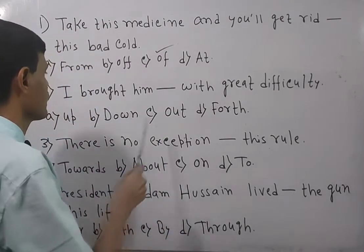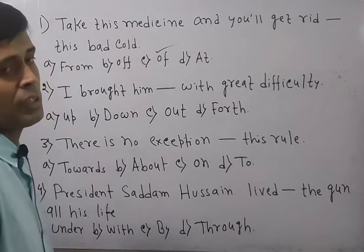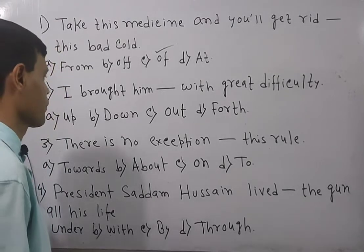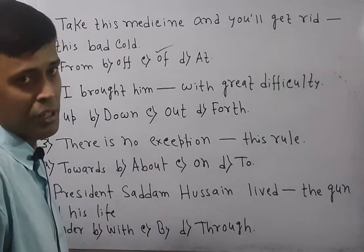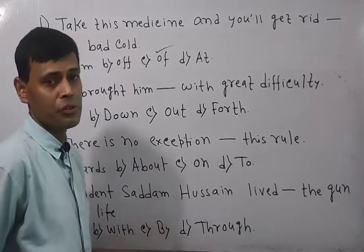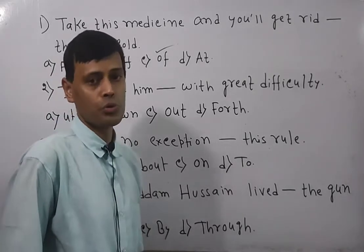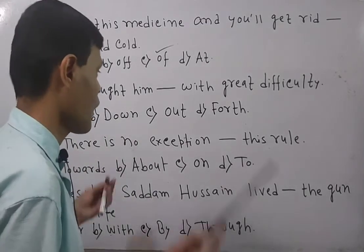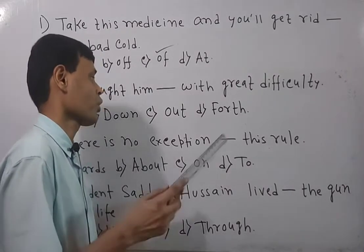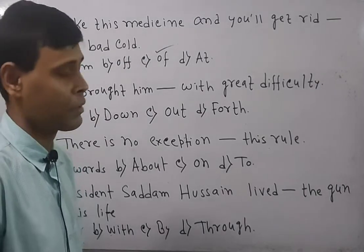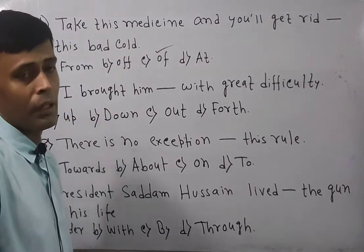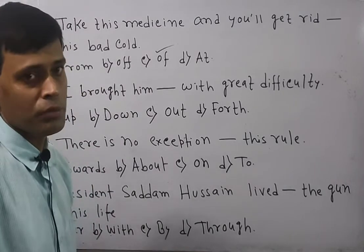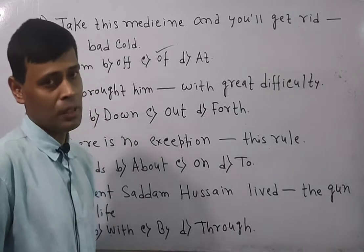Now the next question: 'I brought him ___ with great difficulties.' There are four options. 'Brought up' means to raise or nurture someone. 'Brought down' means reduced or alleviated. 'Brought out' means published or exposed. 'Brought forth' means produced. Looking at the sentence: 'brought down,' 'brought out,' and 'brought forth' do not fit, but 'I brought him up' means I made him grow or nourished him — with great difficulties, meaning in spite of lots of struggle, I raised or nurtured him.